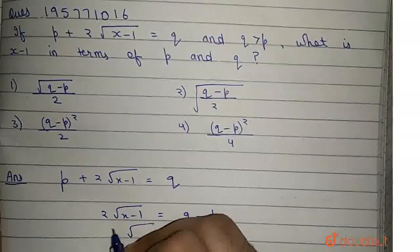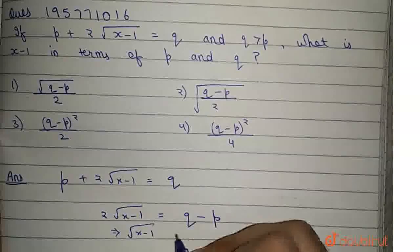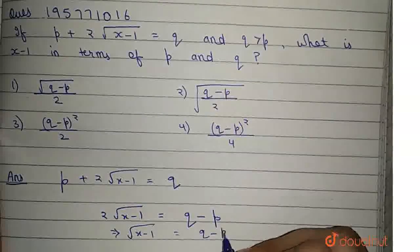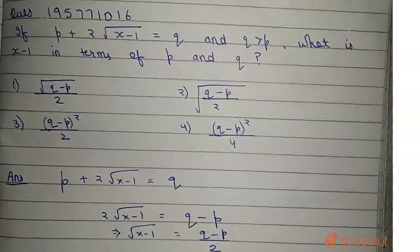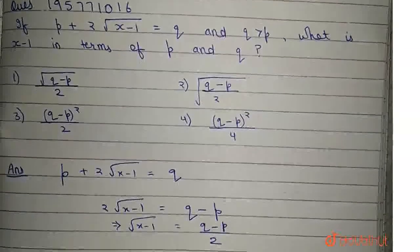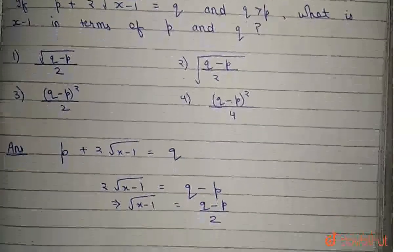Hence, square root of x minus 1 equals q minus p divided by 2.